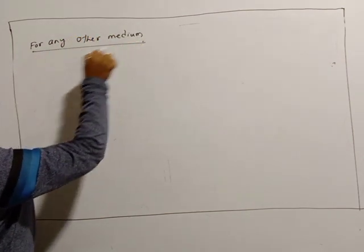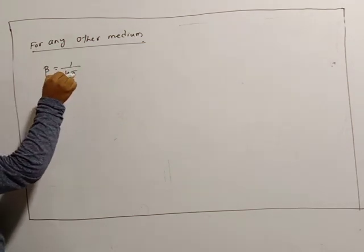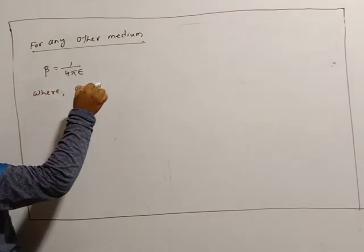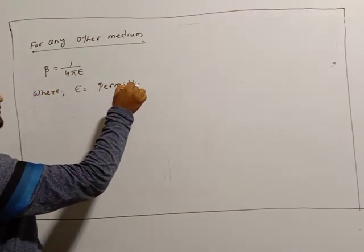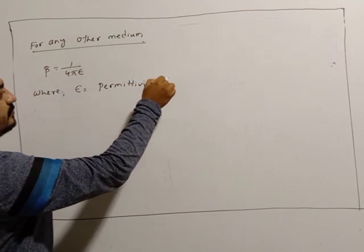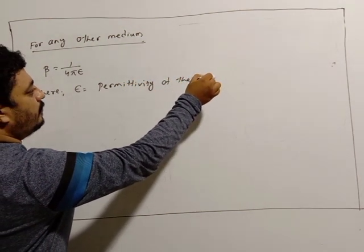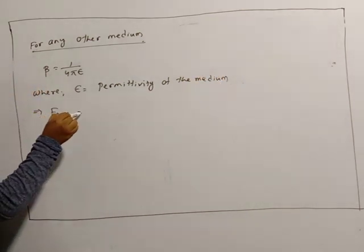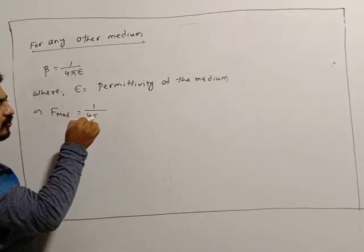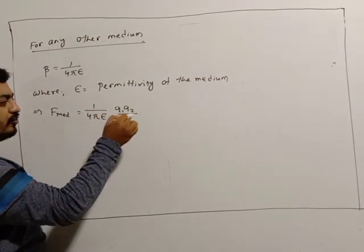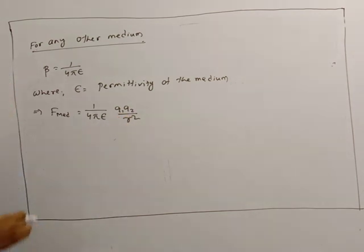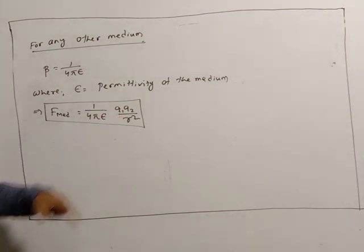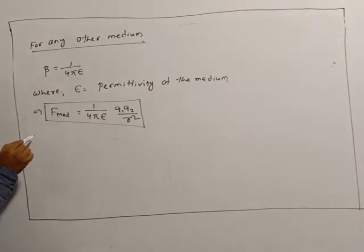For any other medium, beta equals 1/(4πε), where epsilon is called the permittivity of the medium. So F_medium equals (1/4πε)·Q1·Q2/R². For any given medium, F_medium equals (1/4πε)·Q1·Q2/R².